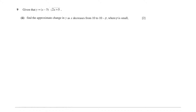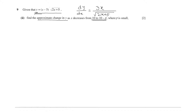Now let's move on to the second part of the question. The equation remains y equals x minus 5 times square root of 2x plus 5, and we use dy over dx equal to 3x divided by square root of 2x plus 5. We have to find the approximate change in y as x decreases from 10 to 10 minus p, where p is small. So the new value of x is 10 minus p, the old value is 10, giving a change in x of minus p.